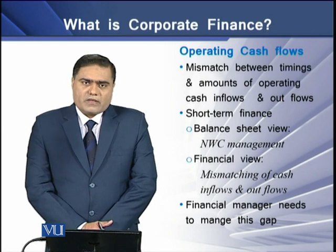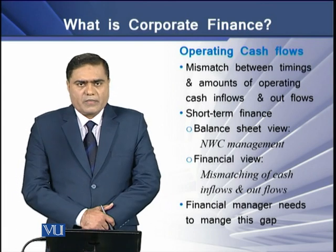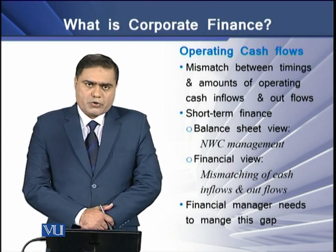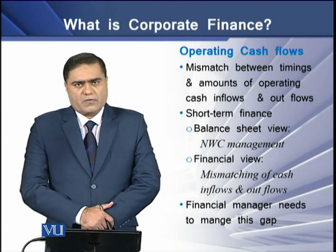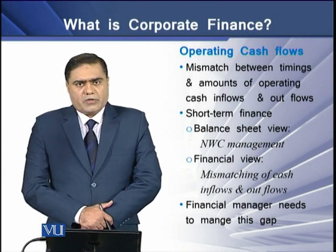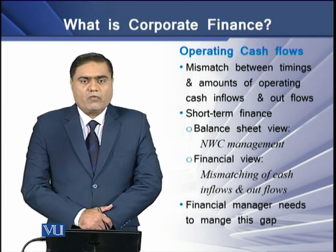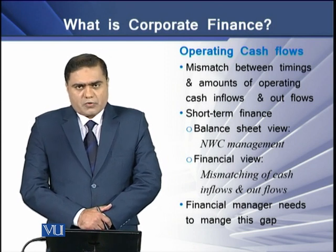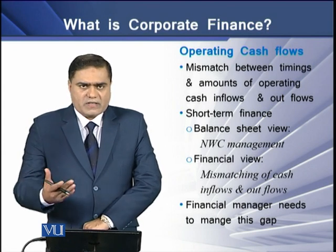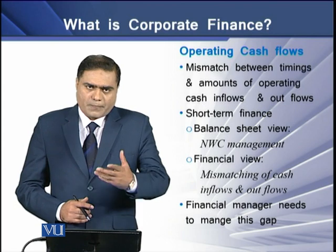There is a problem that while the firm is generating cash inflows and outflows during a particular period of time, there is a mismatch between cash inflows and cash outflows. That mismatch is due to the timings and amounts of the cash flows. For example, regarding timings, you may have a maximum of 17 days to pay your creditors, while you allow your debtors to pay you back after 20 days. So you are making payments to your creditors 3 days earlier, creating a gap of 3 days between your cash inflows and cash outflows.